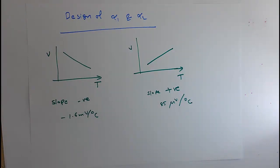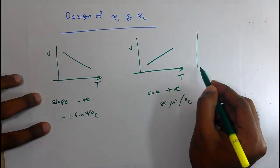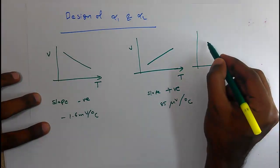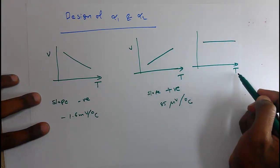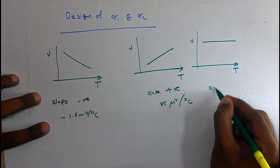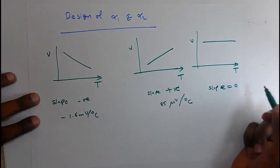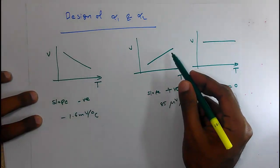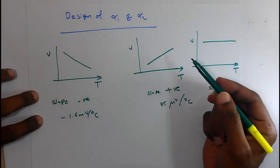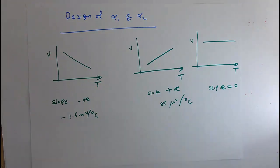We want to add PTAT and CTAT together to form a reference voltage. The characteristic of the reference voltage should be a straight line — constant with respect to temperature — meaning the slope should be zero. Slope negative means voltage is decreasing, slope positive means voltage is increasing, and slope zero means voltage is constant with respect to temperature. This is what we want to achieve using the band gap reference circuit.